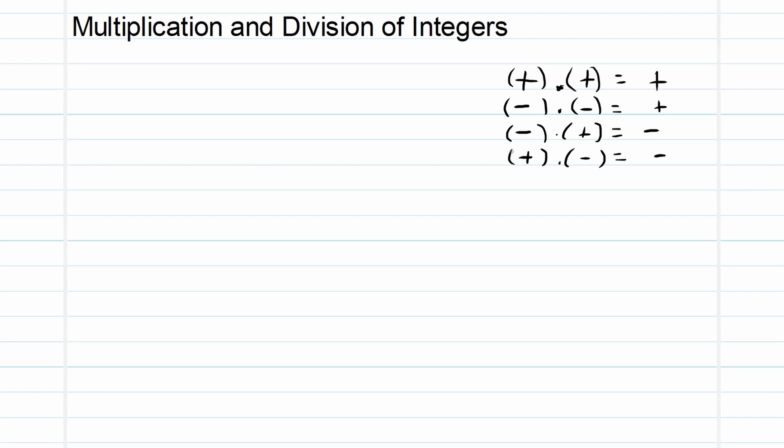Now the same happens with division. The moment I say a plus divided by a plus, it's equal to a plus. A negative divided by negative is equal to a plus, and a positive divided by negative is equal to a negative. Lastly, a negative divided by positive is equal to a negative as well. So this is the key to multiplying and dividing correctly. Let me show you an example.